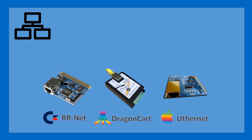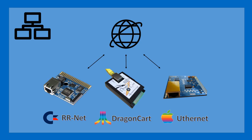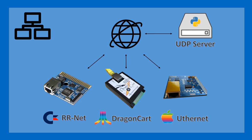For the networking side, there is support included for various Ethernet hardware: the RRNet on the Commodore, the Dragon Cart on the Atari, and the Uthernet on the Apple. That hardware can talk to the internet, which can then talk to a UDP server you would have set up somewhere. Inside the Unity SDK, I include an example of a Python UDP server which you can run locally to test the functionality of this UDP communication.